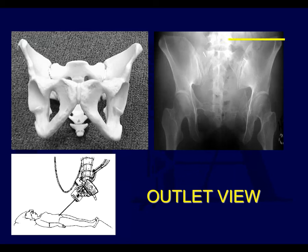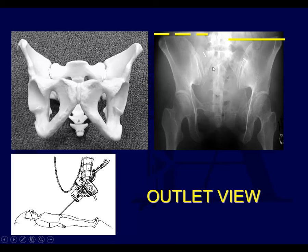On the outlet view, the superior ramus is up here, whereas on the AP it's positioned differently relative to the S1 foramen. When doing SI screws intraoperatively, this is the view you want to use to avoid going into the sacral foramen — you can see them end-on. The outlet view gives a frontal view of the sacrum, shows vertical displacement, and provides a nice view of the sacral foramina.